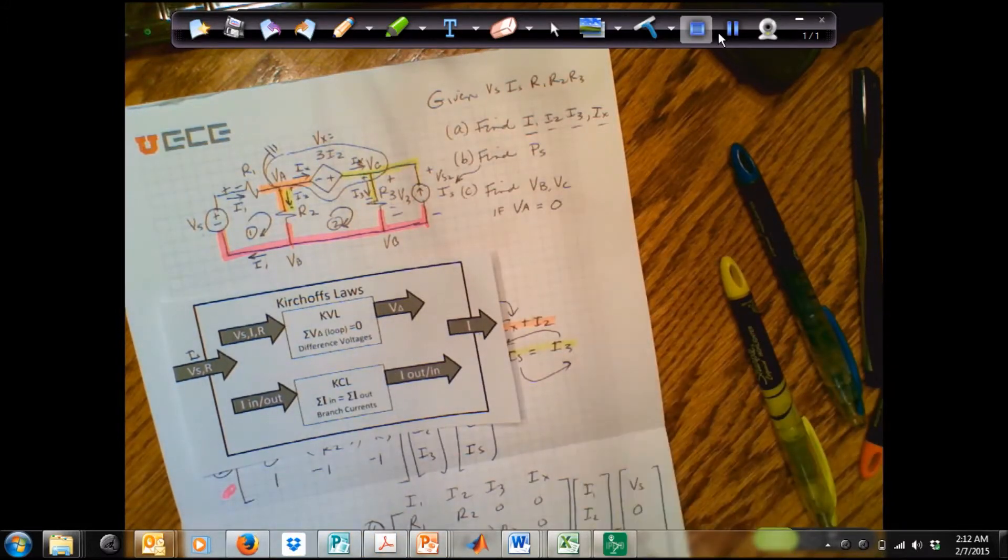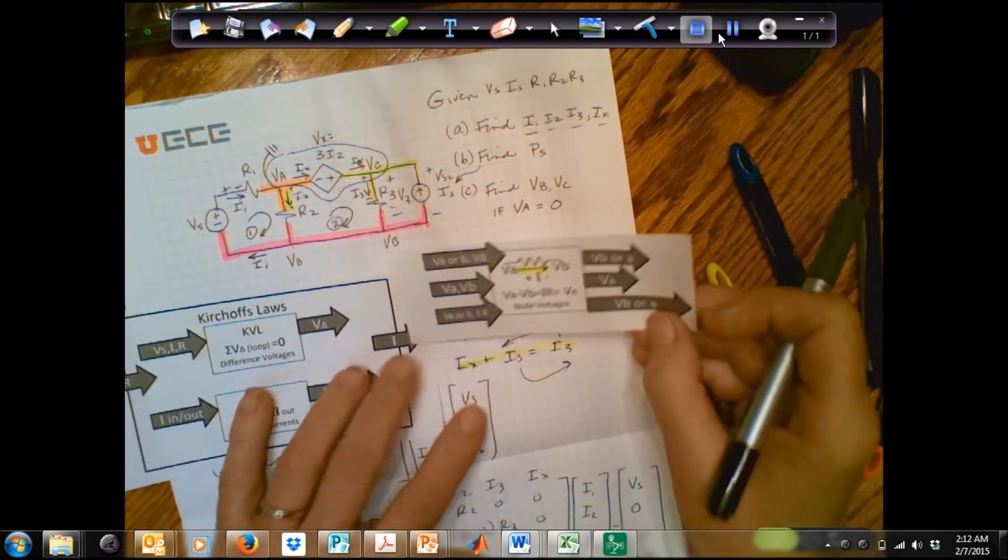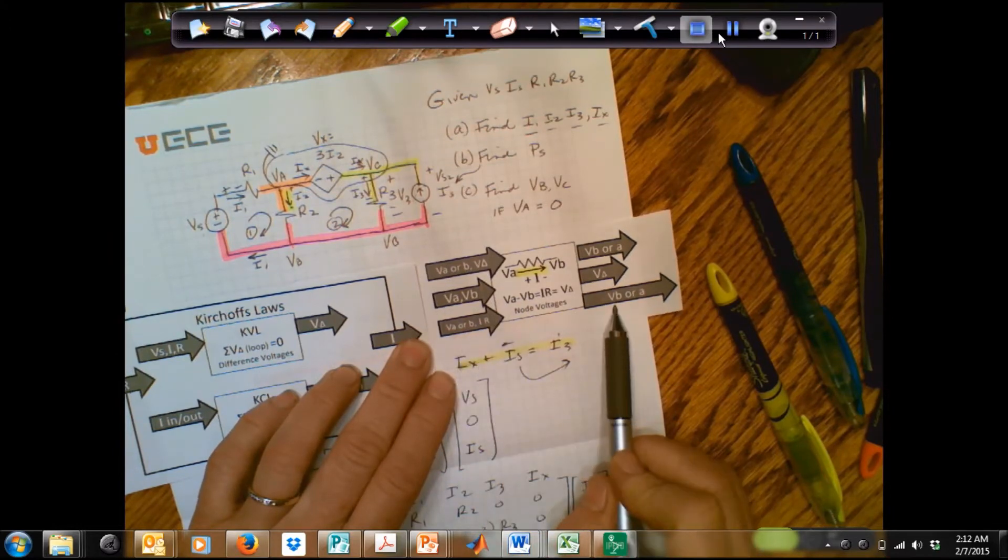Then we wanted to find the node voltages. In order to find the node voltages, we used the currents and one of the nodes. We have to know one node at least. We know one node and the current and resistance. And that allowed us to find the rest of the nodes.